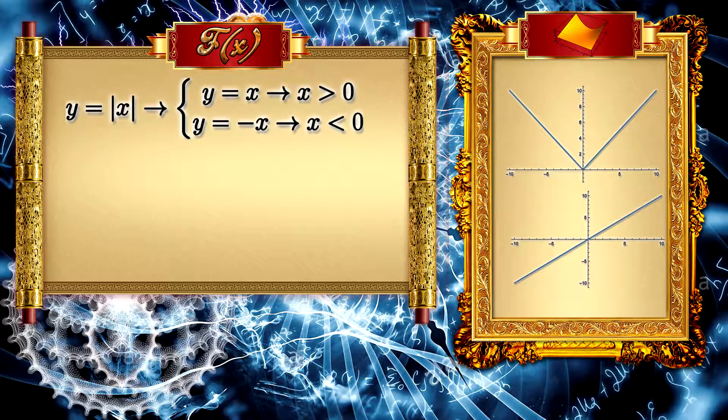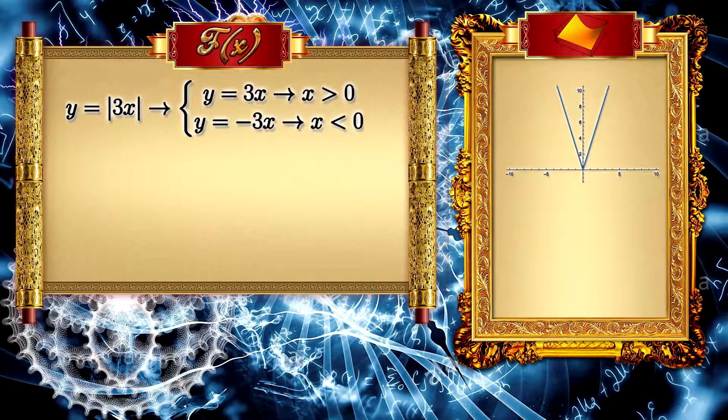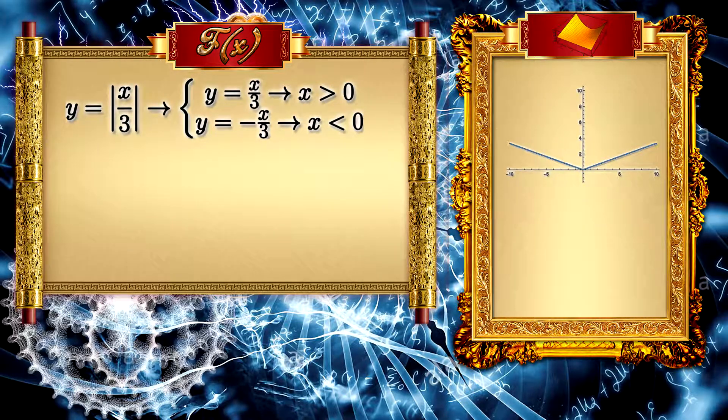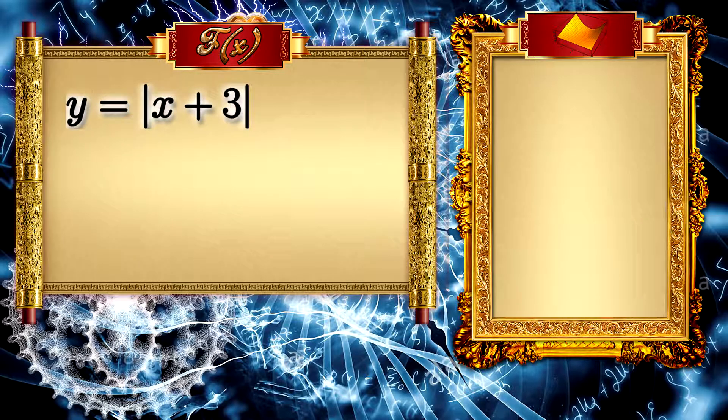We can see other graphs as Y equal to 3X module, see also X divided by 3, which change the angle.